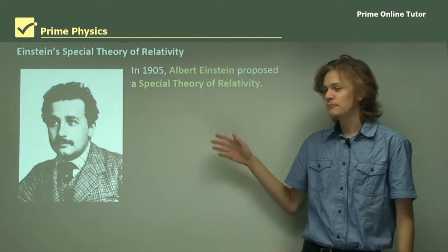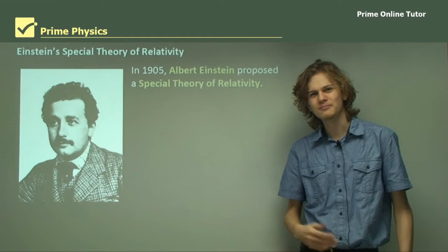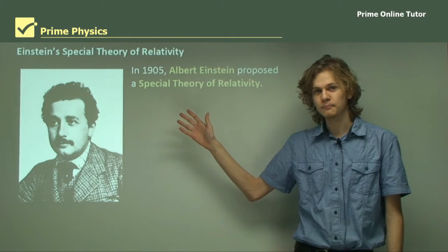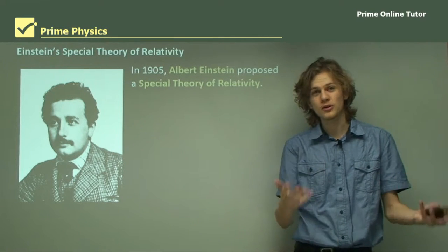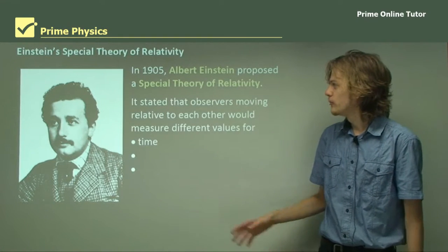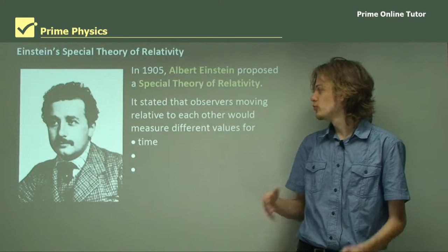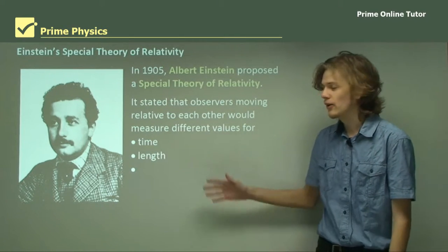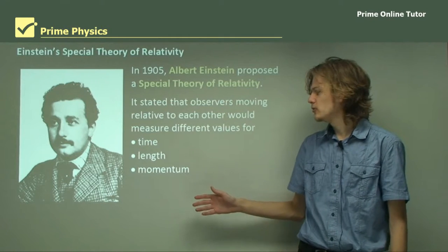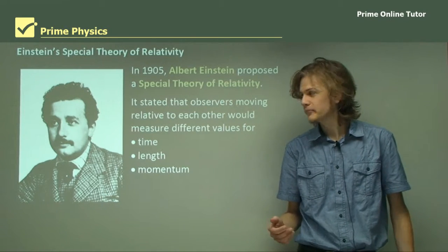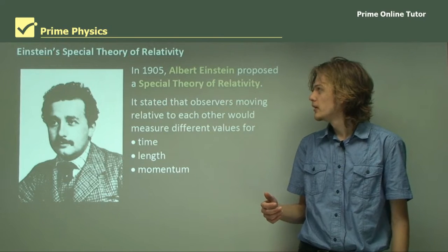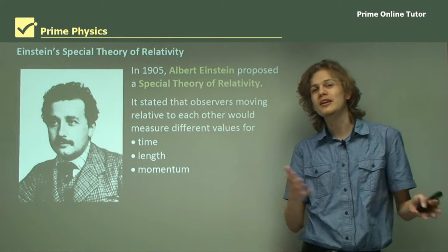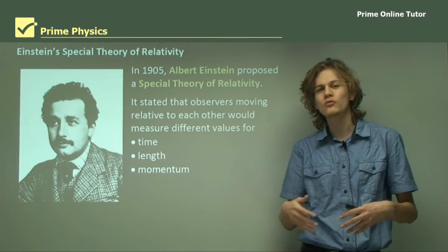In 1905 this fellow here, Albert Einstein, you might have heard of him, came up with a special theory of relativity. It's special because it's to do with a special case. It stated that observers moving relative to each other would measure different values for time, length, momentum, or mass in some interpretations. The special theory was that it only works when people aren't speeding up or slowing down. They're moving at constant velocities.